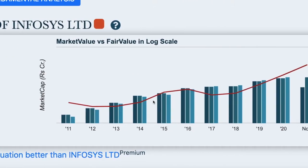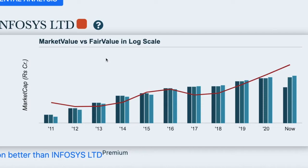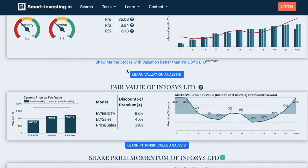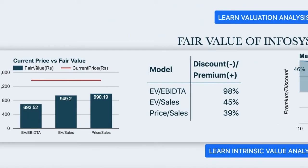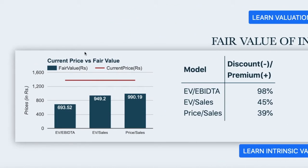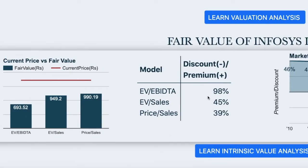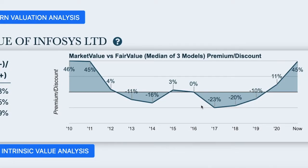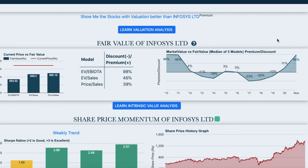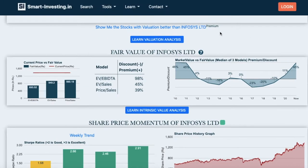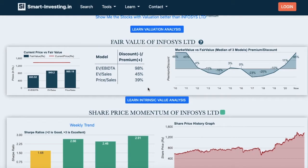The next chart shows how the market cap has historically moved in comparison to the fair value, derived via three different models. The next section shows the indicative fair value calculated via three valuation models: enterprise value to EBITDA ratio, enterprise value to sales ratio, and price-to-sales ratio. The table shows whether the current market price is trading at a premium or discount and the quantum of the same. The next chart shows the historical premium or discount at which the stock has traded over the past few years, created by considering the median of the fair value calculated via three models for each year.